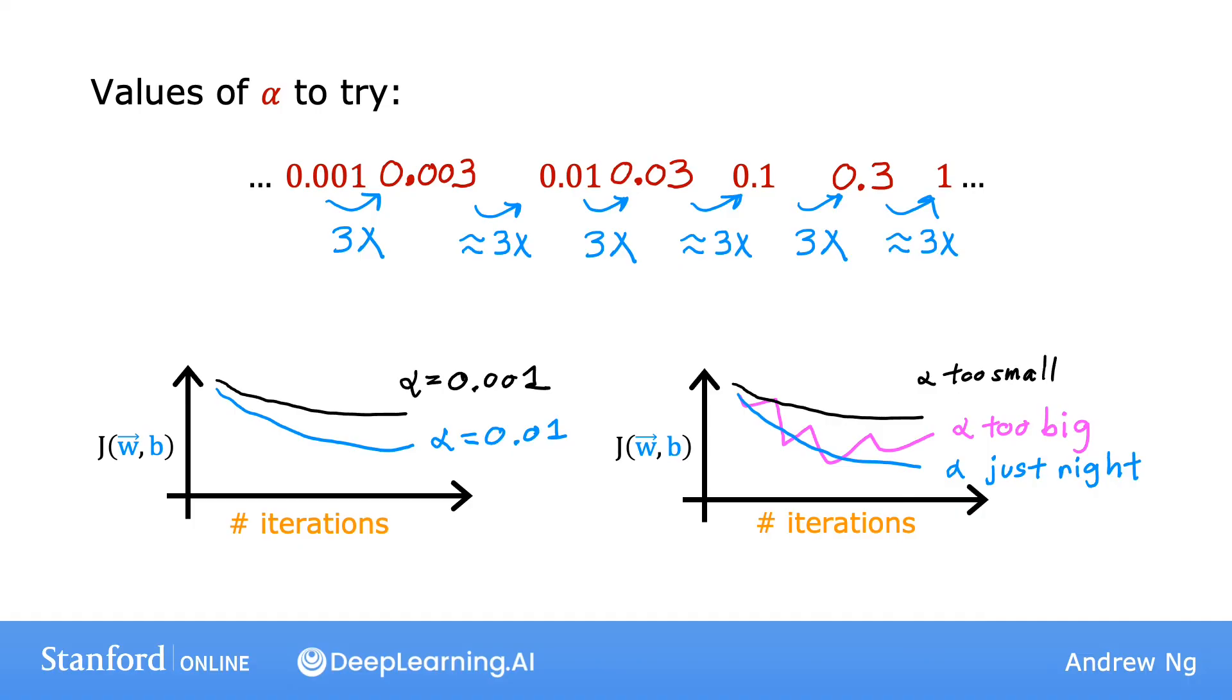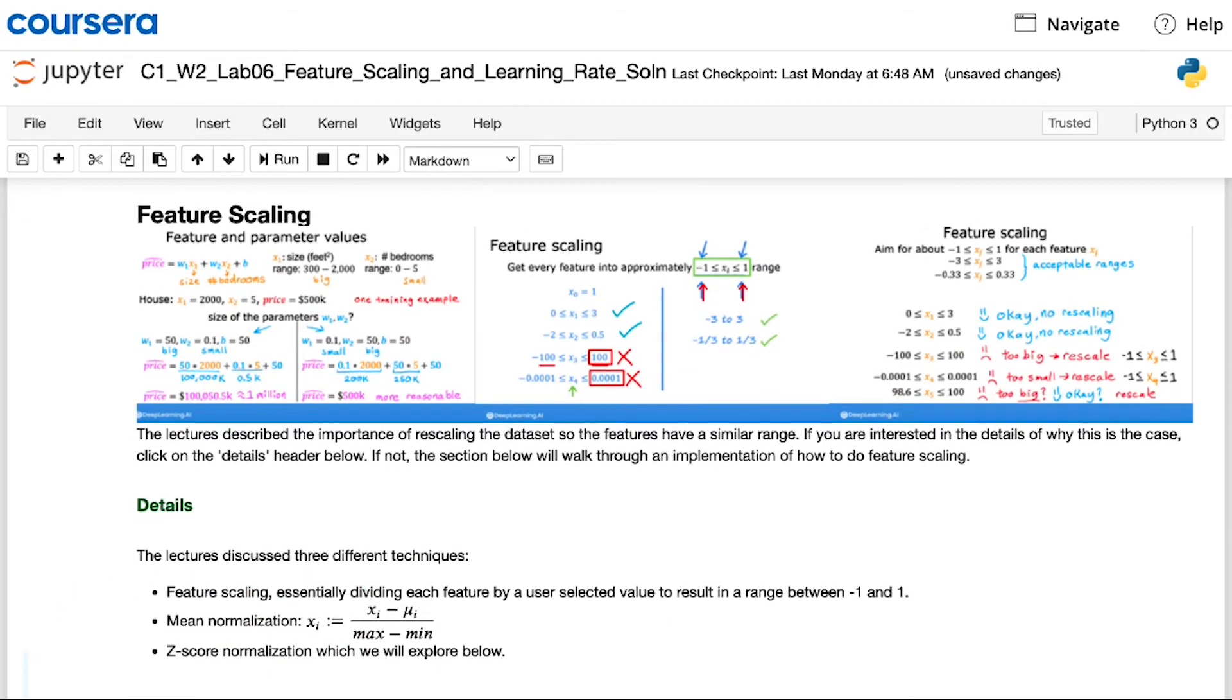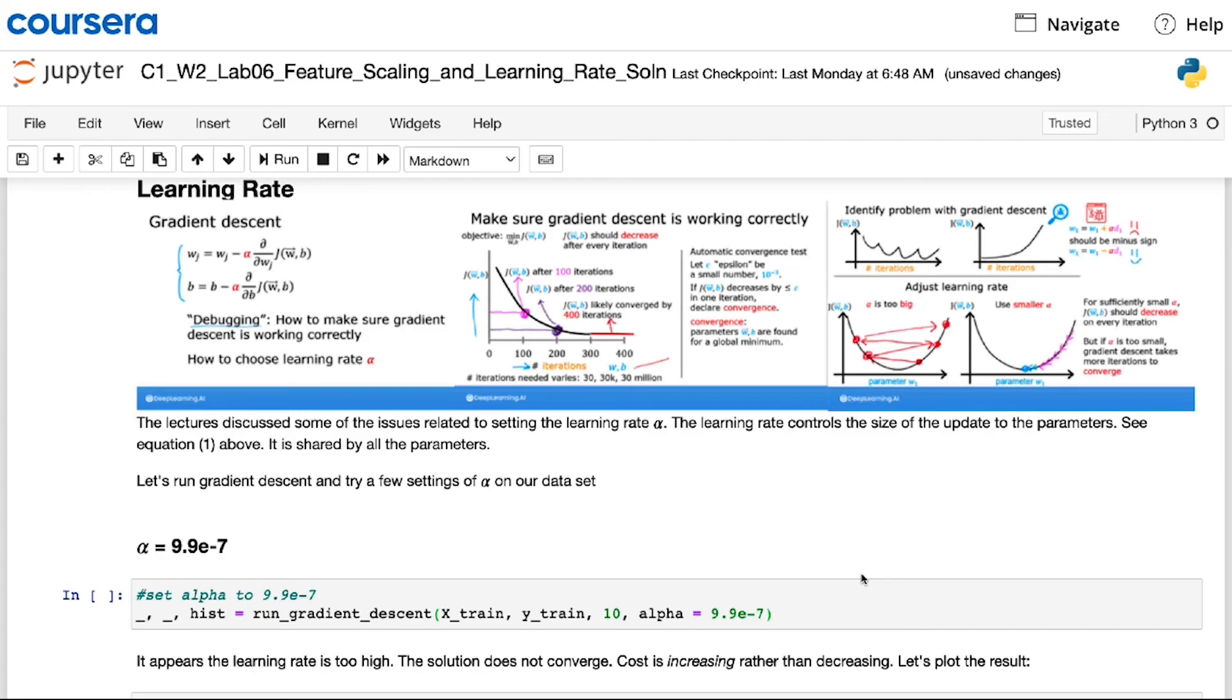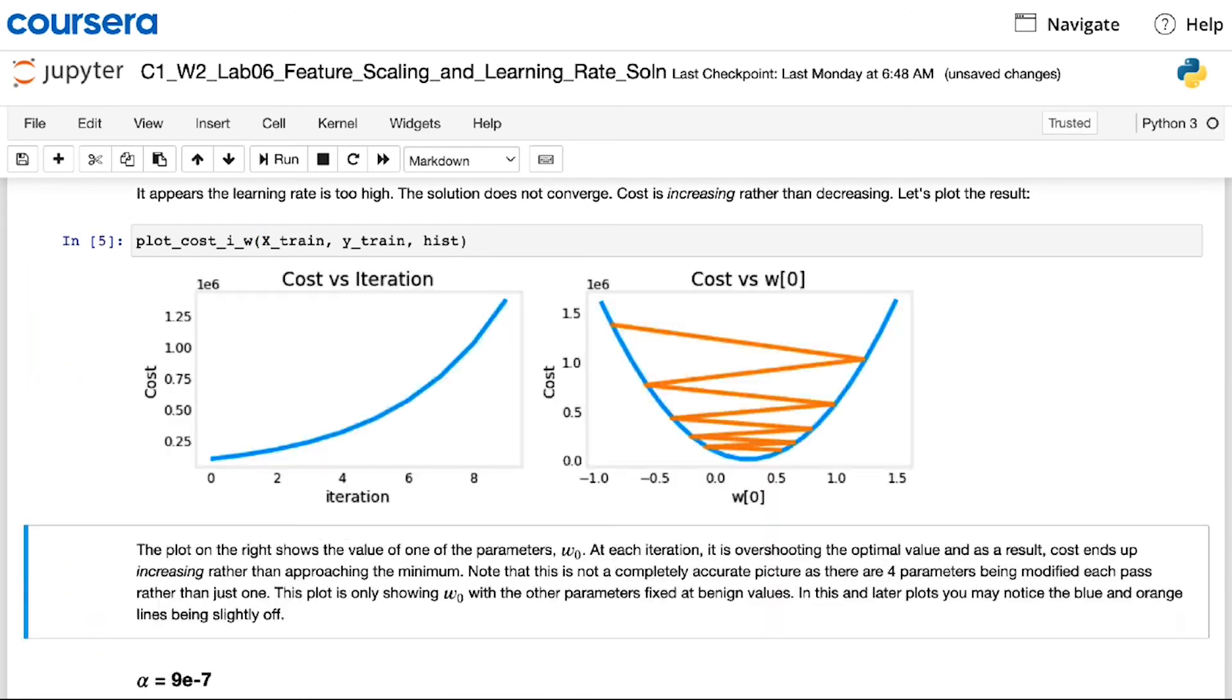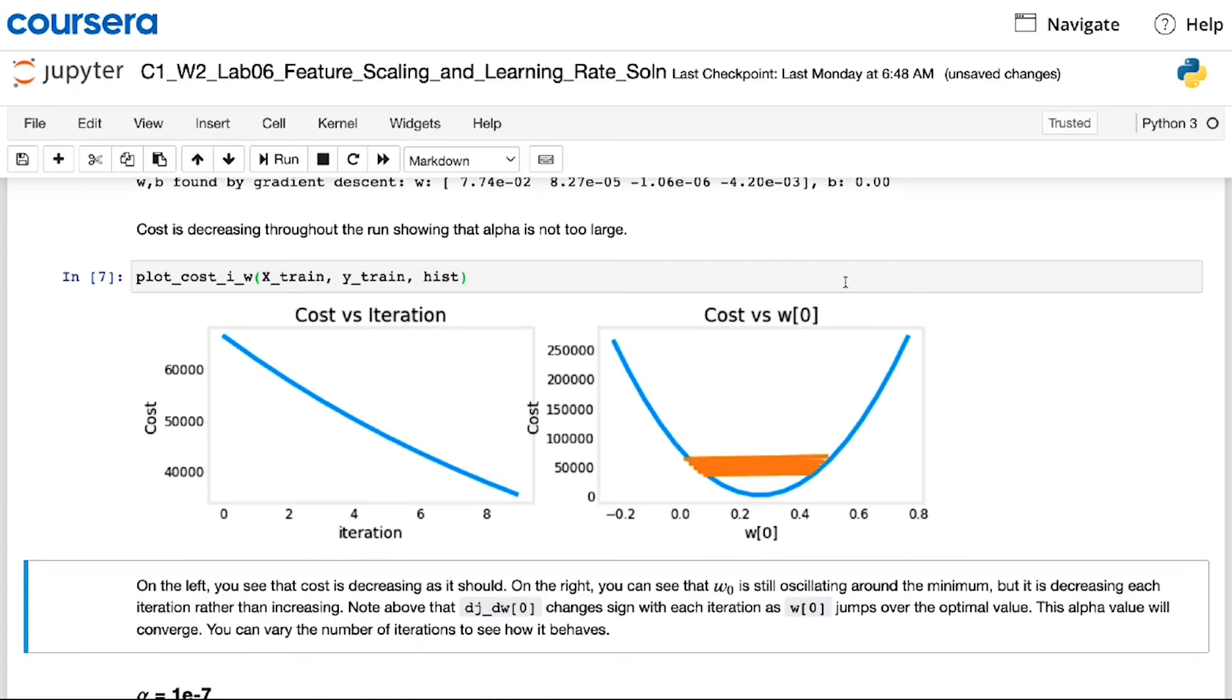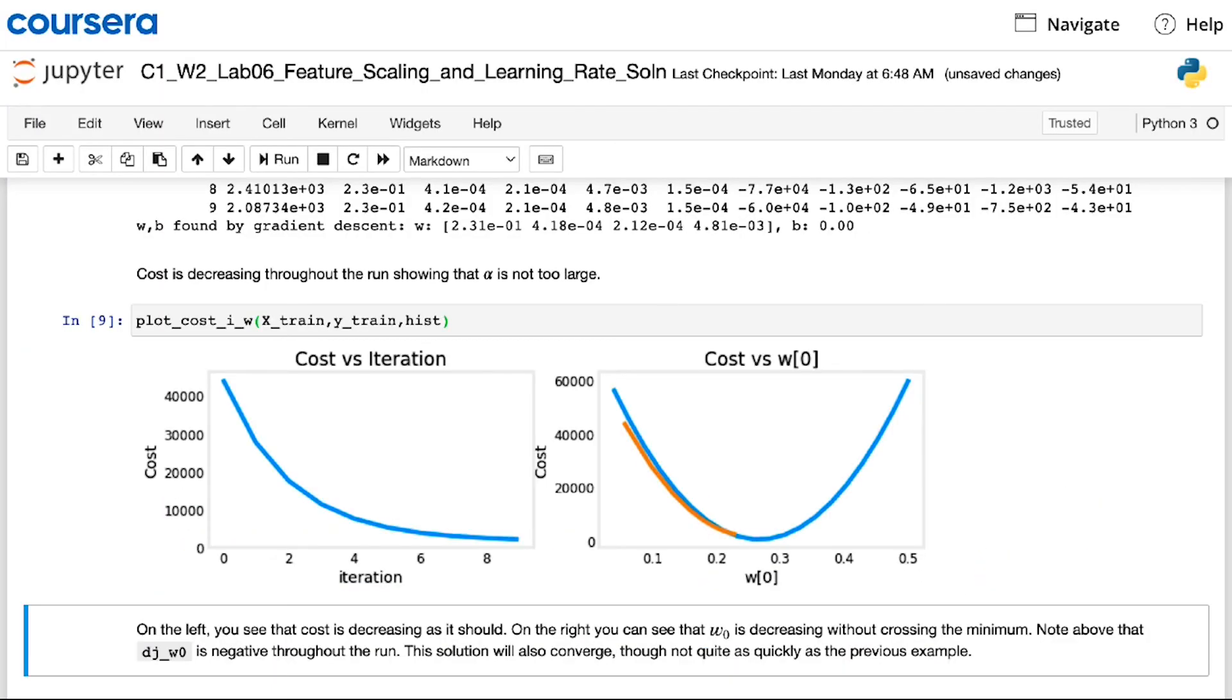I hope this technique will be useful for you to choose a good learning rate for your implementation of gradient descent. In the upcoming optional lab, you can also take a look at how feature scaling is done in code, and also see how different choices of the learning rate alpha can lead to either better or worse training of your model. I hope you have fun playing with the value of alpha and seeing the outcomes of different choices. Please take a look and run the code in the optional lab to gain a deeper intuition about feature scaling as well as the learning rate alpha.